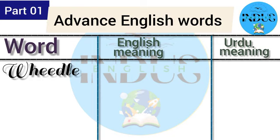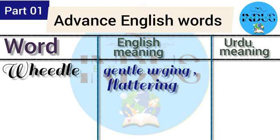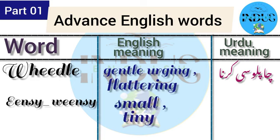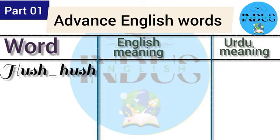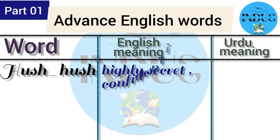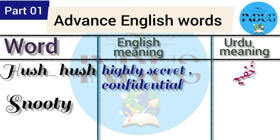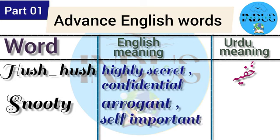'Wheedle' means gentle urging or flattering. In Urdu, it means chaplusi karna. 'Itsy-bitsy' means small or tiny. In Urdu, it means mamuli. 'Hush-hush' means highly secret or confidential. In Urdu, it means khufiyah. 'Snooty' means arrogant or self-important. In Urdu, it means magroor.